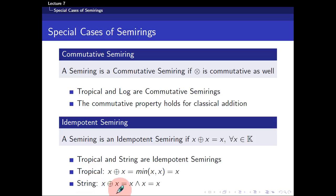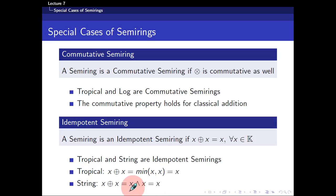As for the string semi-ring, x plus x is written as x wedge x, where wedge denotes the longest common subsequence. Suppose you have a string x — what is the longest common subsequence with its own self? It's itself. For example, given the string 'a p p e', compared to 'a p p e', the longest common subsequence is 'a p p e'. So x plus x gives you x, and thus the string semi-ring is also an idempotent semi-ring.